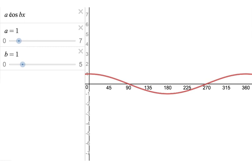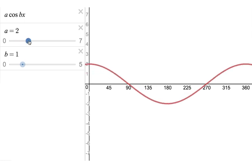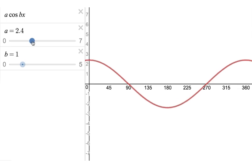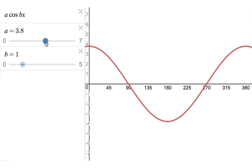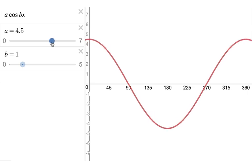So we're going to have a look to see what effect changing the values of a has on this normal cosine graph. So let's move a upwards to 2, up to 3. So it's 3 cos x, 4 cos x, 5 cos x.